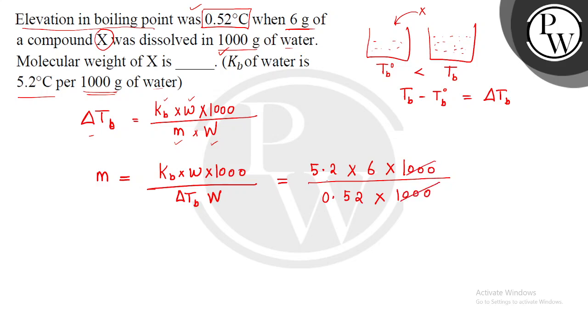So thousand se thousand cancel out ho jayega. Isko solve agar hum karte hai, answer aata hai 60, that is 60 gram per mole. So the molecular weight of solute X, that is 60 gram per mole. And 60 is the right answer of this question. Hope you understood it well, good luck.